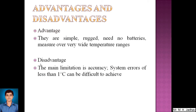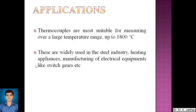The main disadvantage is limited accuracy: the least count of a thermocouple is 1°C, so it can measure 1 degree high or low from the accurate value. If the temperature changes by a small amount — for example from 37°C to 37.5°C — it cannot be detected. Applications include measuring over large temperature ranges up to 1800°C, and thermocouples are widely used in the steel industry, heating appliances, and manufacturing of electrical equipment such as switchgear.